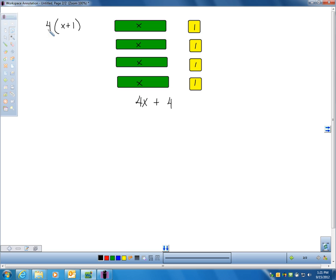Now, remember, each of these tiles were my x tiles, and each of these were just my 1 tile, which are worth 1. Can you see in this picture how I have 4 x tiles plus 4? This is a picture of distributing. Now, how do I get this to that on paper without having to use these tiles?